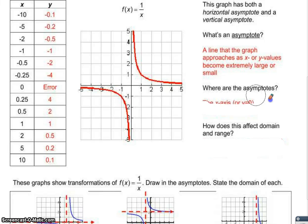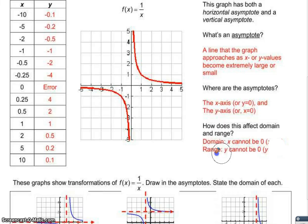Where are the asymptotes? The x-axis (or y = 0) and the y-axis (or x = 0). How does this affect the domain or range? My domain is that x cannot be 0, and my range is that y cannot be 0.